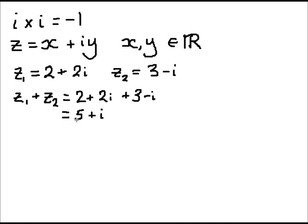So, z₁ plus z₂ is the complex number 5 plus i. I can multiply complex numbers,